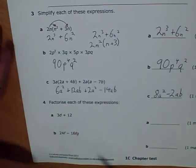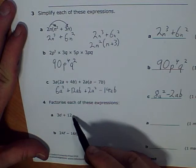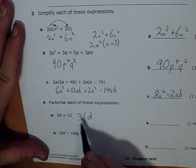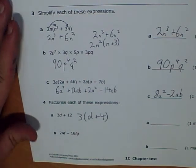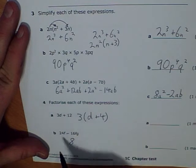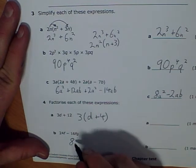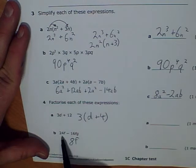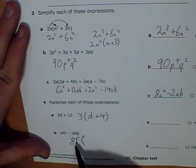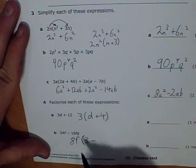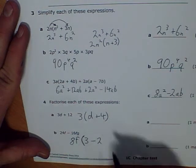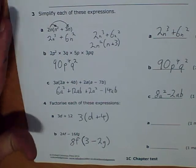Right, factorizing. Factorize each of these. I need to look for a common factor here. I've got 3 as a common factor of 3d and 12. So I can put that outside the brackets, and inside the bracket I'll put d plus 4. Let's have a look at this next one. 24f take away 16fg. 8 is the highest common factor of both 24 and 16, and I've got f here as well. So I've got 8f outside the bracket. What do I need to multiply it by? If I have 3 lots of 8f, I've got 24f. And 8f times by minus 2g gives me minus 16fg.